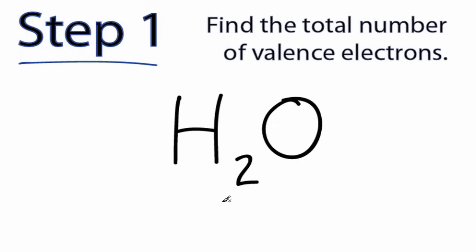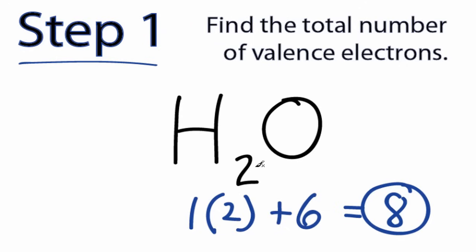Step 1. Find the total number of valence electrons for the molecule you're drawing the Lewis structure for. Let's try one. We'll use the periodic table to figure out how many valence electrons each element has. Hydrogen is in group 1 on the periodic table, so it has one valence electron. But the subscript tells us that we have two hydrogens, so we'll need to multiply that by 2. Oxygen is in group 6 or 16. It has 6 valence electrons. And when we add that up, 2 plus 6, we get a total of 8 valence electrons for H2O.